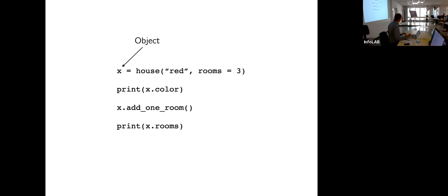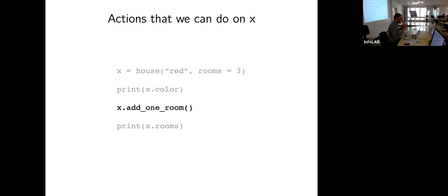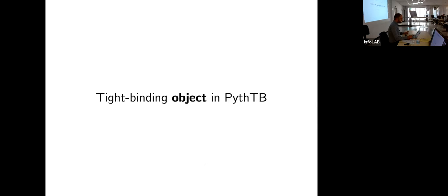Then there's this thing called an object, which has more information — this is a layer of abstraction. For example, this x is supposed to represent a house. The house has certain information stored inside: it happens to be red and has three rooms. If you need to pull up any information about x, you say x dot color and print it. There are also things called methods — actions you can do on the object. For example, I can add one room, and now x dot rooms has four rooms.